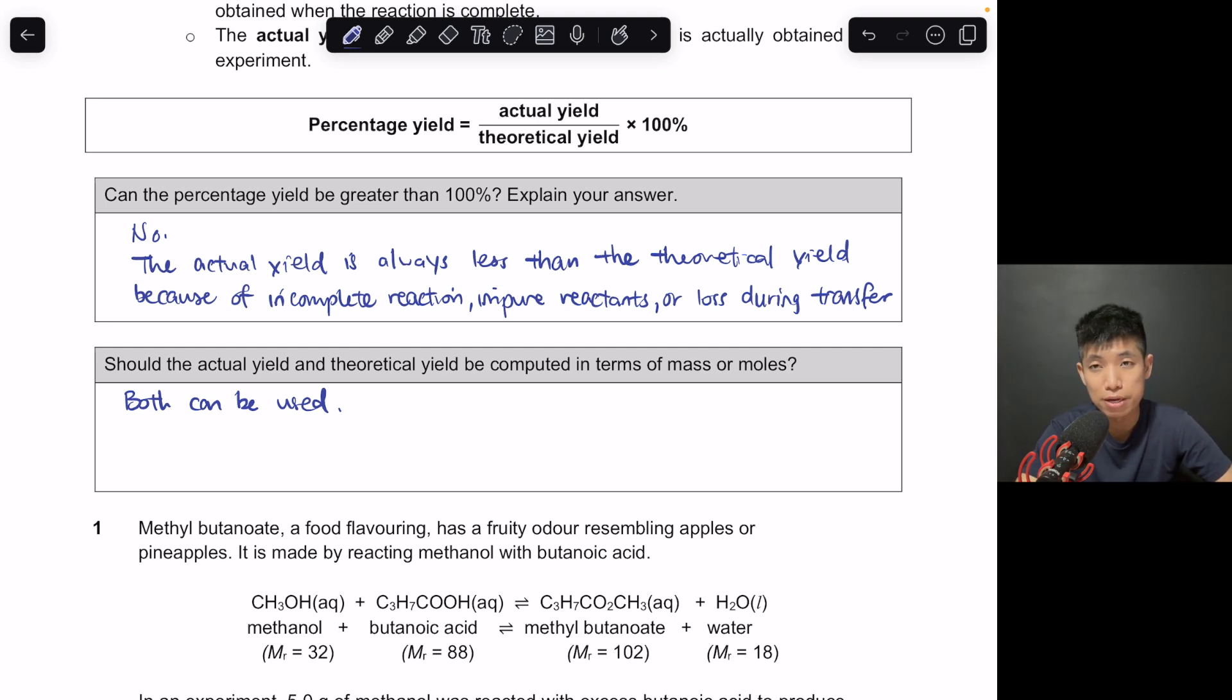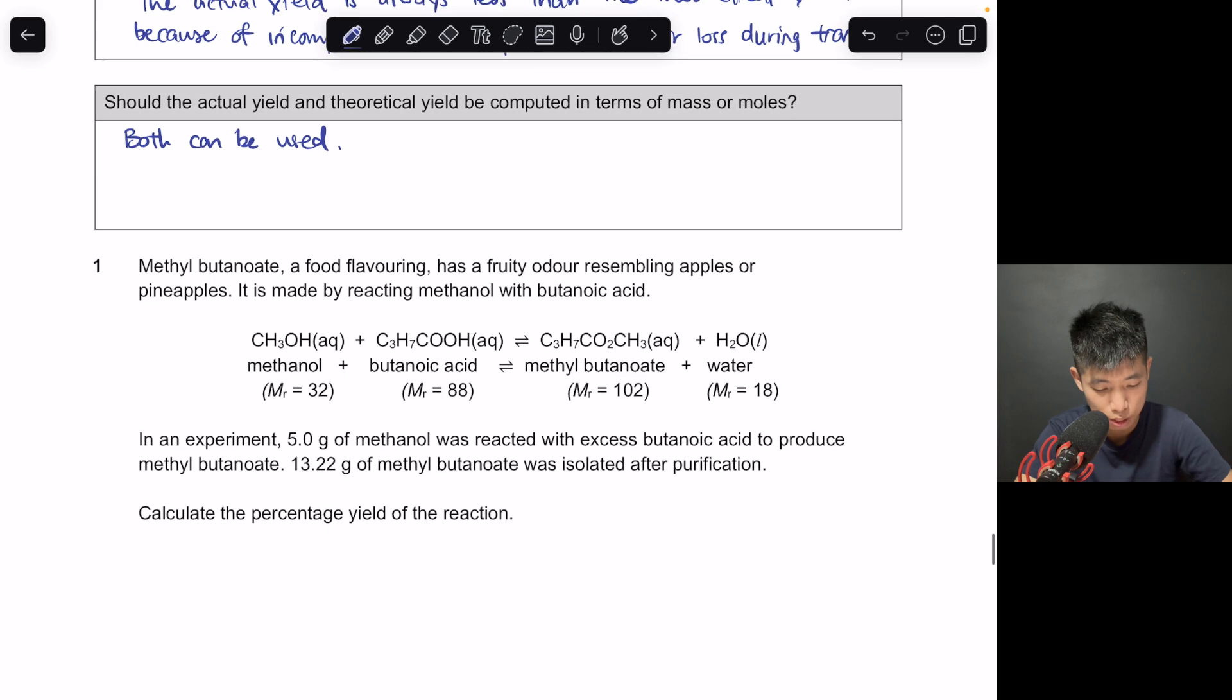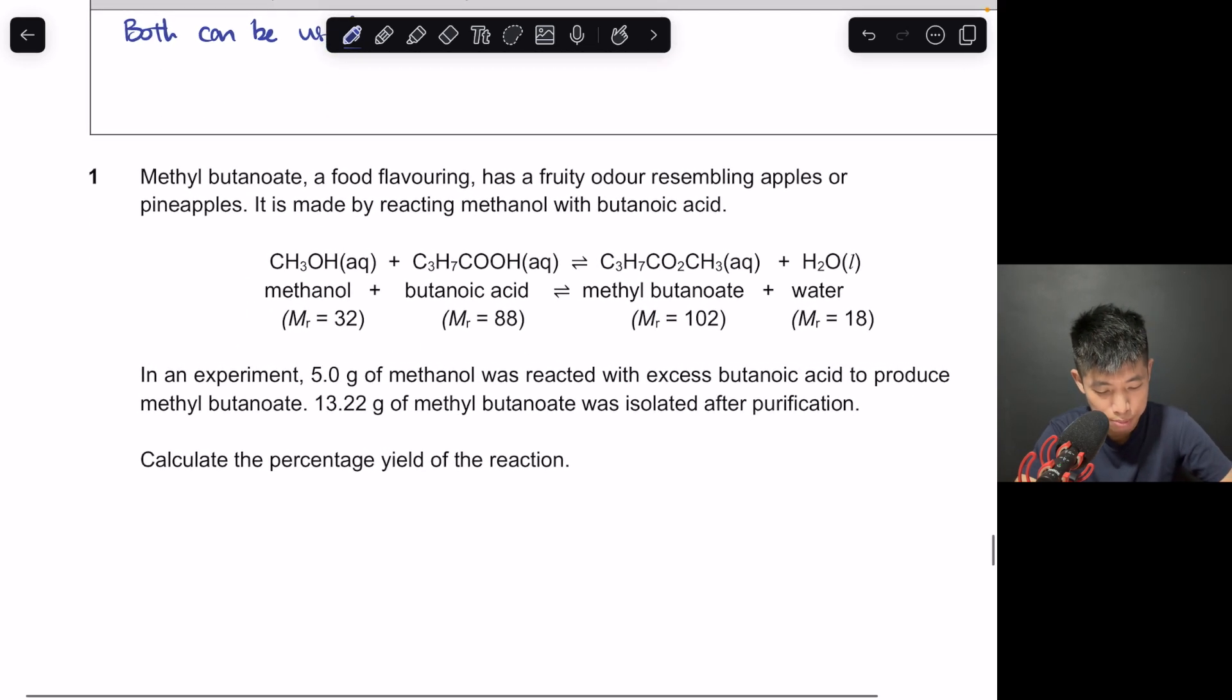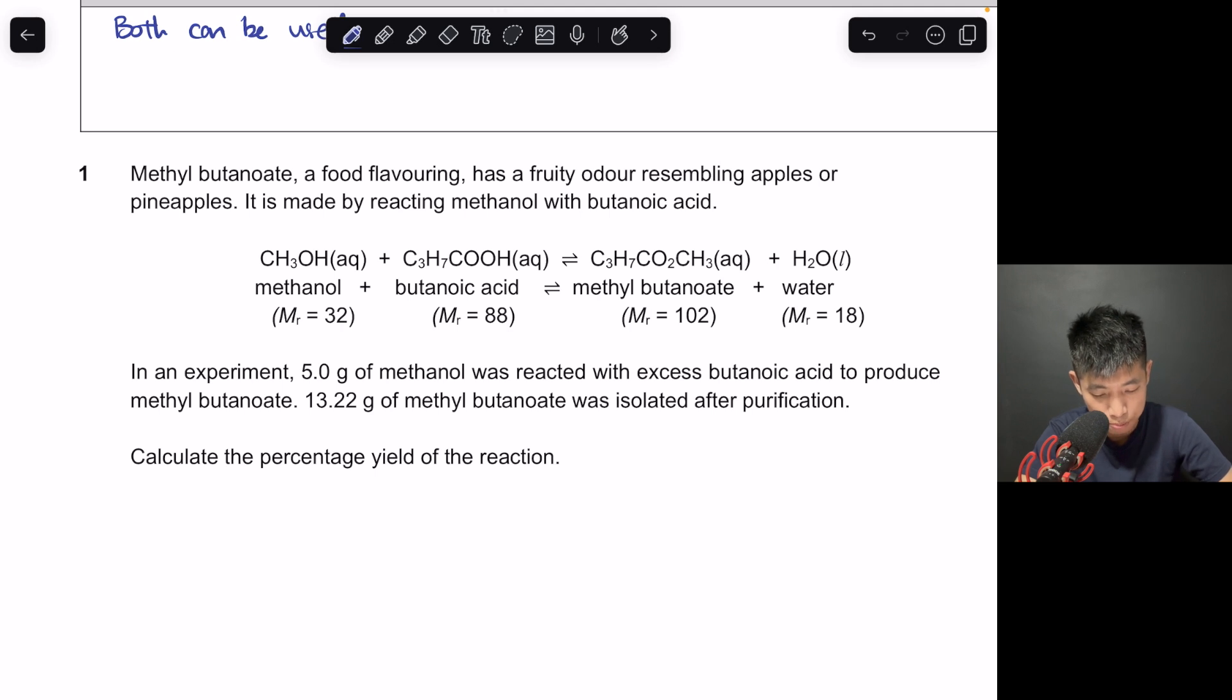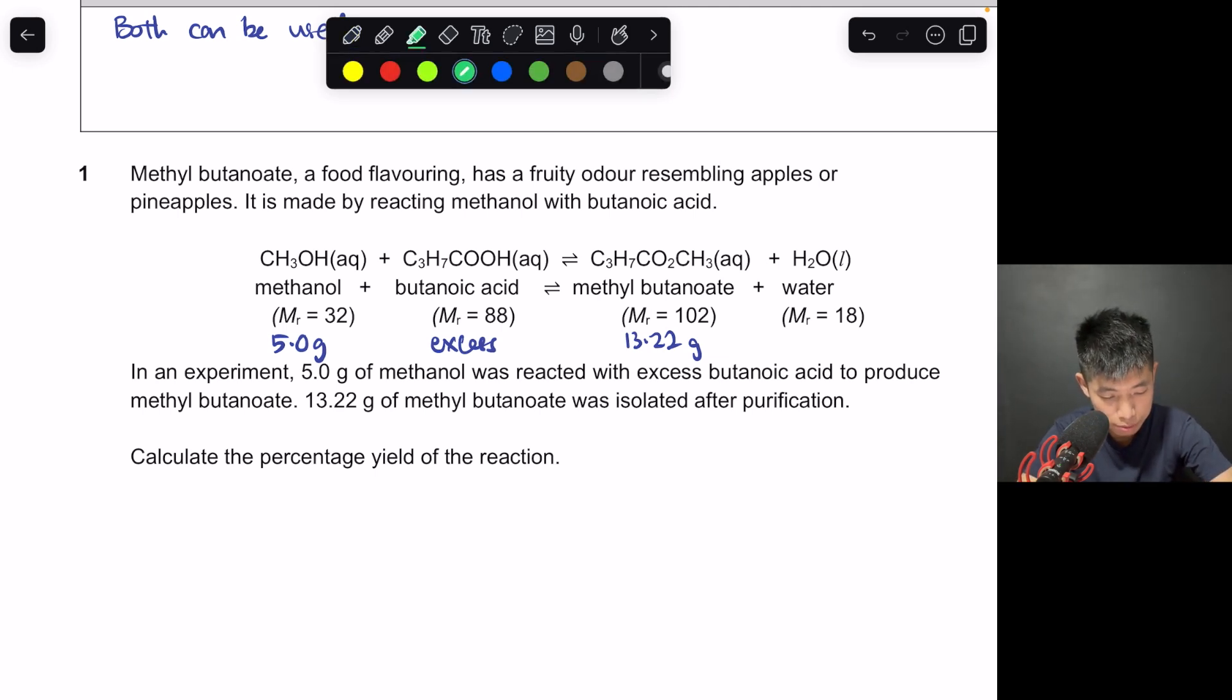I'll be going through with you some examples. They may or may not be the same as what is in your notes, but if they are not the same, I'll be uploading the answers that you can check later on. But just work through the examples with me here to have a better understanding of how to carry out the calculations. So over here, we have the first example where methanol reacts with butanoic acid to form this methyl butanoate and water. So in the experiment, I have 5 grams of methanol reacted with excess butanoic acid to produce methyl butanoate, and they say 13.22 grams is isolated. If we are talking about the percentage yield, what is the formula? We start by writing out the formula. 13.22, this is the actual yield, because this was what was obtained in the experiment. So we need to find what is the theoretical yield.